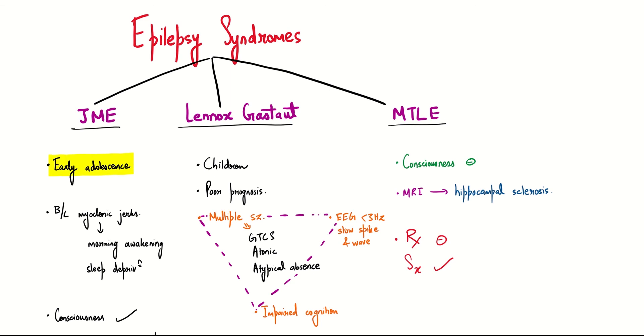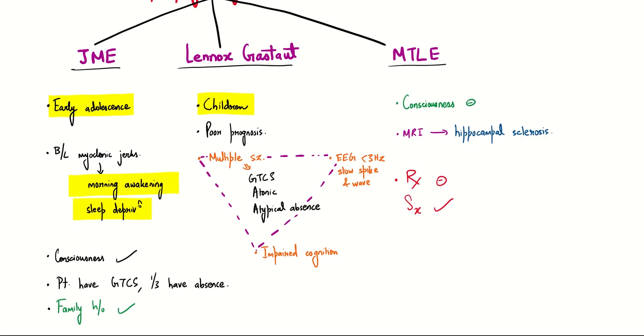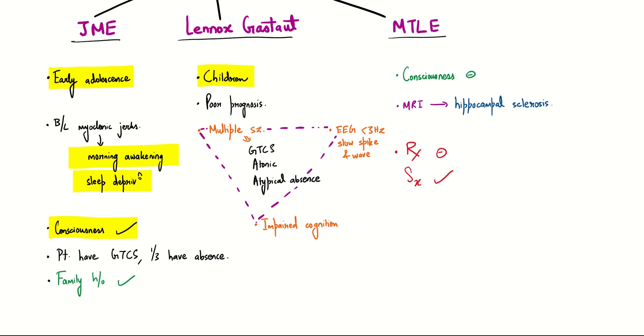In JME, the patient will be in early adolescent stage, while Lennox-Gastaut is seen in children. In JME, the myoclonic jerks will be seen upon morning awakening and/or sleep deprivation, while consciousness will be present. The patient will have GTCS and one-third of patients will have absence. A family history will be seen - you have to remember this. In JME, a family history is seen. This is very important.